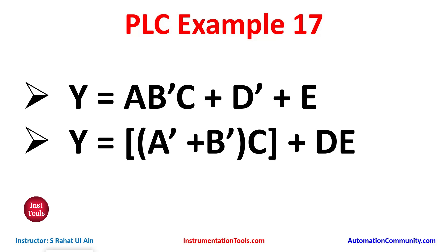Then, in parallel to A, B', C, we will connect D' and E, so in this way we will implement an OR gate. Let's move to EcoStruxure Machine Expert where we will draw a ladder diagram for this Boolean expression.